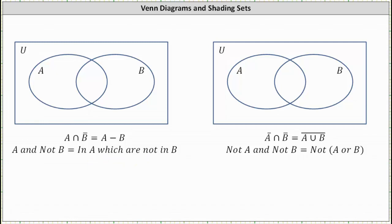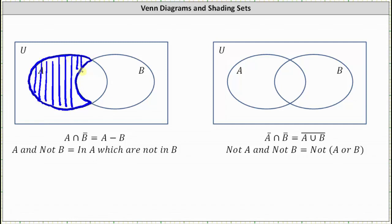So we want to shade the region of the Venn diagram that is in set A and not in set B, which would be this region here. This region represents the set of elements that are in A and not in B — that is, A intersect B complement, or A minus B.